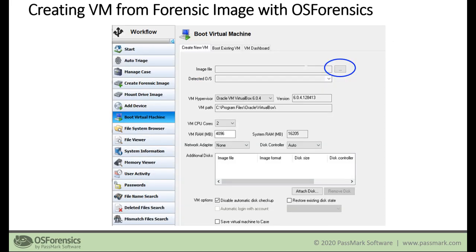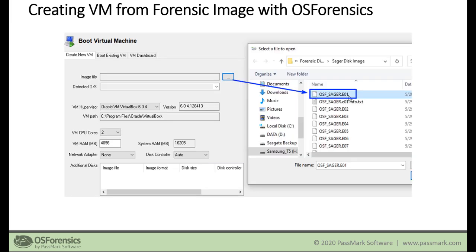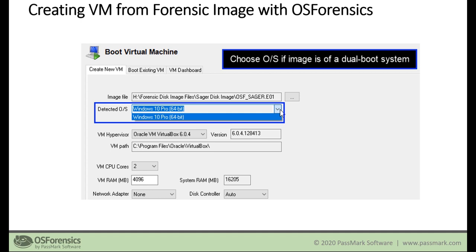Once you do that, you'll be taken to the Boot Virtual Machine module. It's really just a matter of pointing to your forensic image file, reviewing some standard options, and clicking Start. You can see here I've got a split E01 image file — I just point to that first E01 file, and OS Forensics will determine what operating system or systems are present on that disk image.